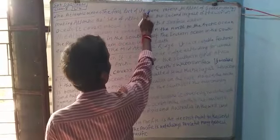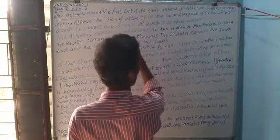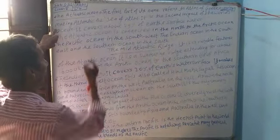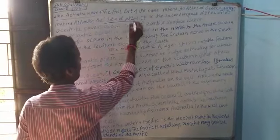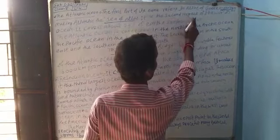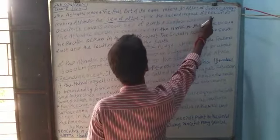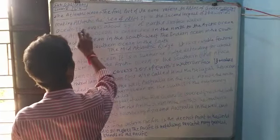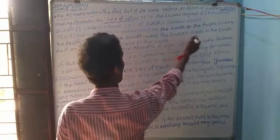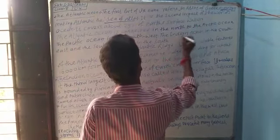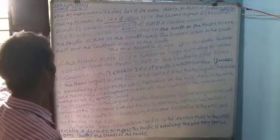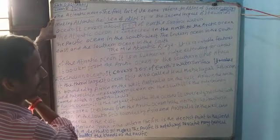The first part of its name refers to the Atlas of Greek mythology. The Atlantic Ocean covers about 29% of Earth's surface water. This is the second world's largest ocean.